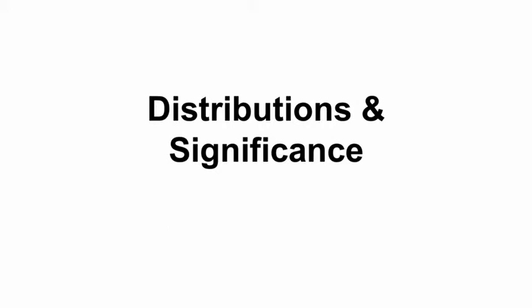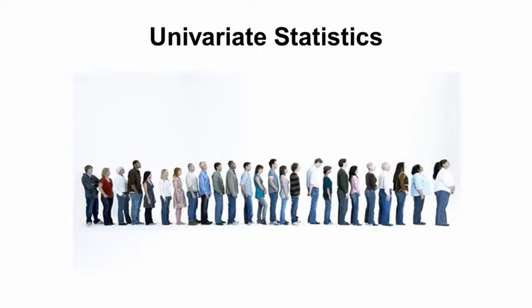Statistics is used because we're dealing with distributions and trying to assess whether something is significantly different or distinct from a distribution. The distribution we're most used to is a univariate distribution—a single variable. For a population of about 25 to 30 individuals, we can measure a single value. We could measure things like height, weight, or IQ. These are single variables—we're not measuring height plus IQ or weight plus height.